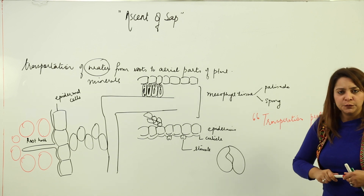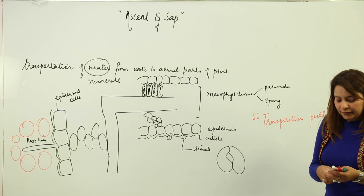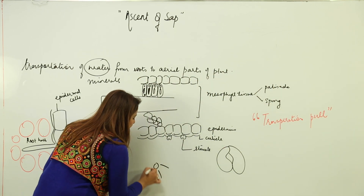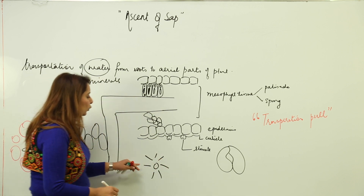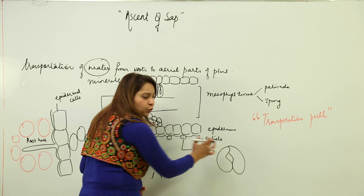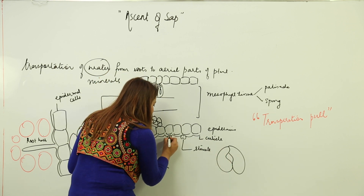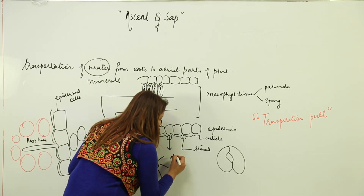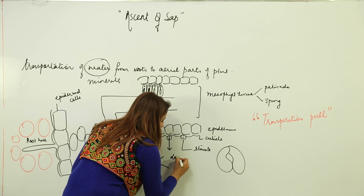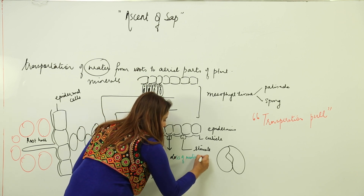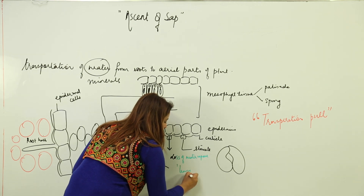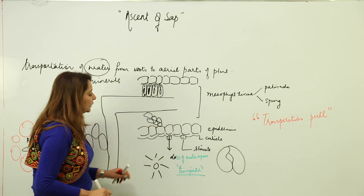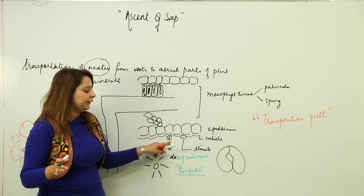During daytime, sunlight causes the stomatal pores to open. When the pores open, there is loss of water vapor from the stomata — that is, transpiration is taking place. This means water is being continuously removed through the stomata.